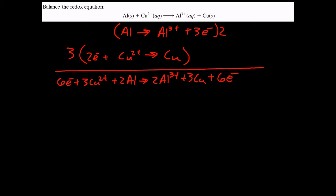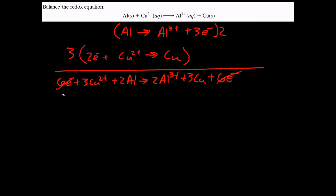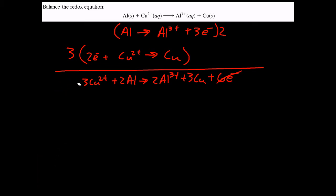We're going to cancel everything out that shows up on both sides. In this case, the only thing that shows up on both sides is those electrons. And so, our final answer then, the balanced chemical equation here is that.